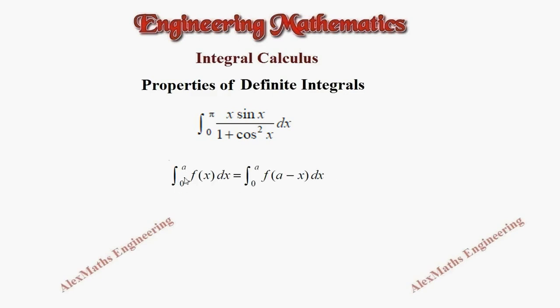We are going to apply the property integral 0 to a f of x dx is integral 0 to a f of a minus x dx. So wherever x is there, we have to replace it by a minus x. And a is nothing but the upper limit. So here the upper limit is π. So we are going to apply the property.